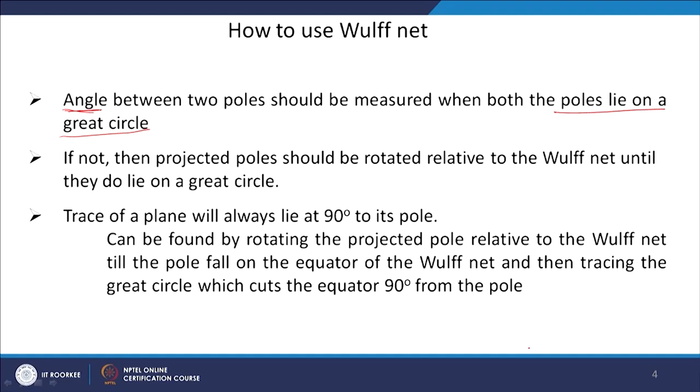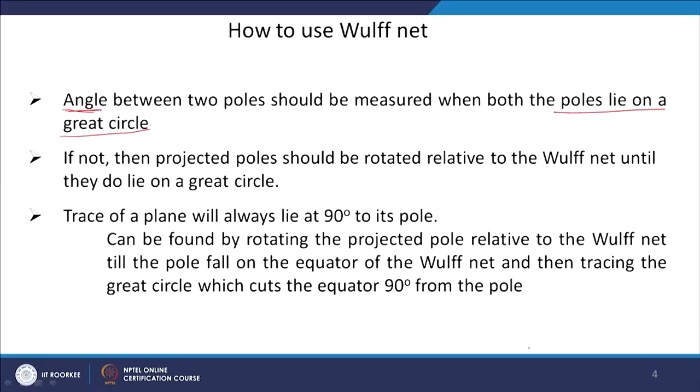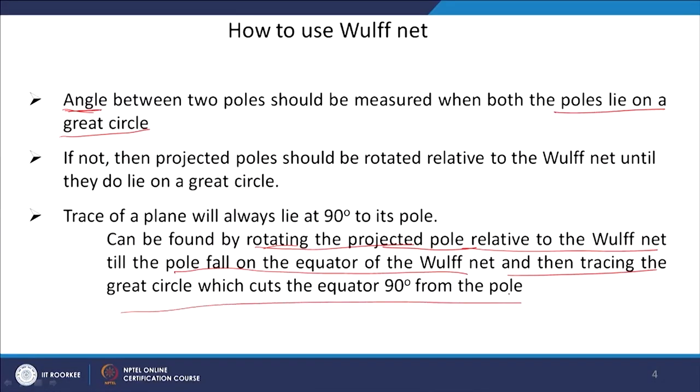We have already discussed that the pole and trace have a 90-degree relationship. So if I want to find the projection of a trace of a particular plane and I already have its pole, I can easily find the trace because I know it will have a 90-degree relationship. To do that, we rotate the projected pole relative to the Wulff net until the pole falls on the equator, then trace the great circle that cuts the equator 90 degrees from the pole.